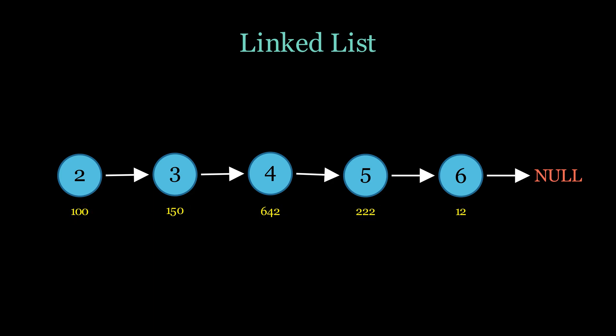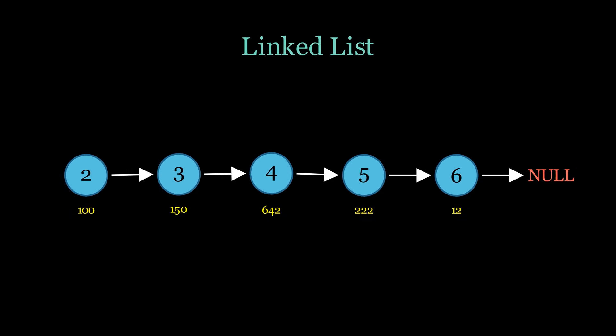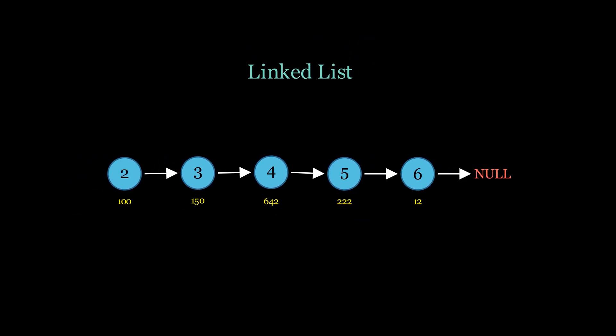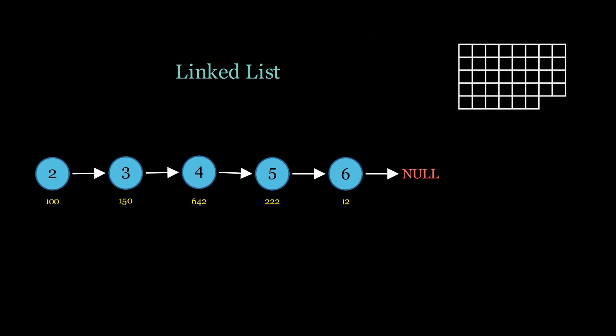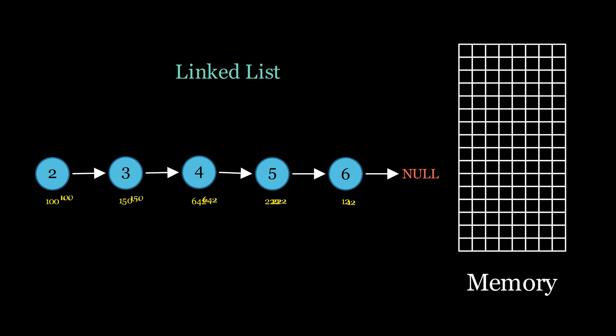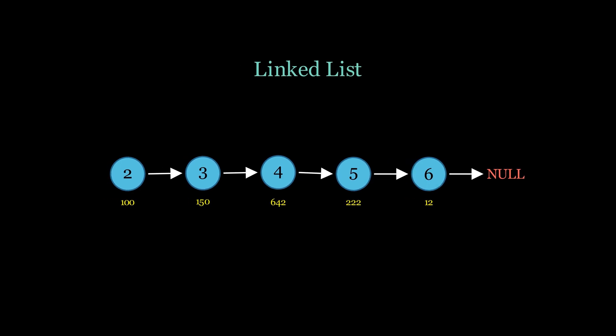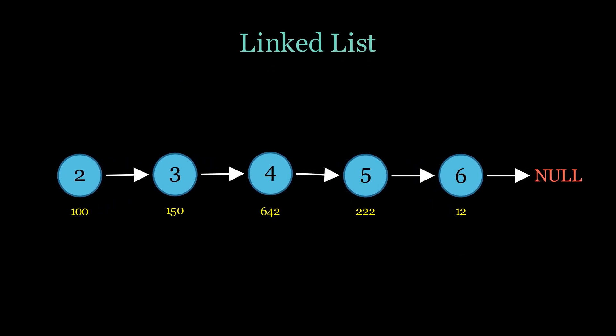Unlike arrays, where elements need to be stored in contiguous memory locations, elements of a linked list can be allocated anywhere in memory. This flexibility allows linked lists to efficiently utilize memory by allocating space as needed, making them more dynamic and adaptable to varying storage requirements.